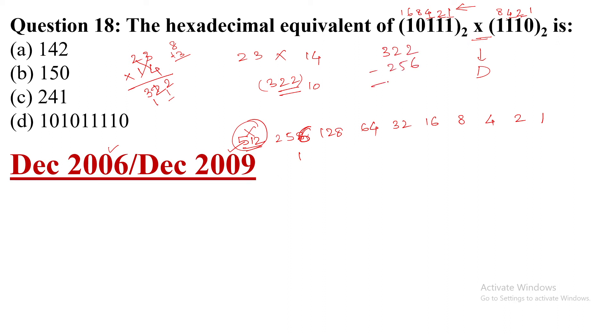Now 322, so we will minus 256. 12 minus 6 is 6, 11 minus 5 is 6. What is 66? Now 128 we will not write because it is a big number. It will be 64 because it is less than it. 64 plus 2 is 66, so here we will write it.